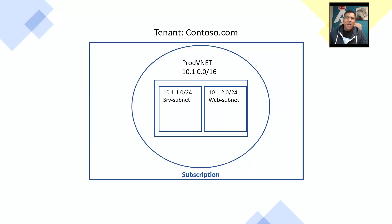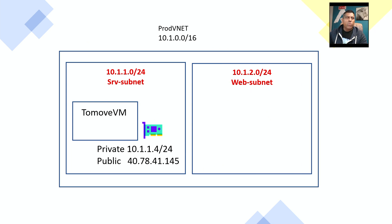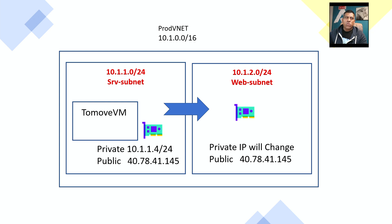The first thing I like to do is show you what the environment looks like and the steps we're going to follow, then jump into the demo. We have a tenant with one VNet and two subnets with two different IP ranges: 10.1.1 for the server subnet and 10.1.2 for the web subnet. We're going to take a VM called 'to-move-vm' with private IP 10.1.1.4 and a public IP address, and move it to the web subnet.